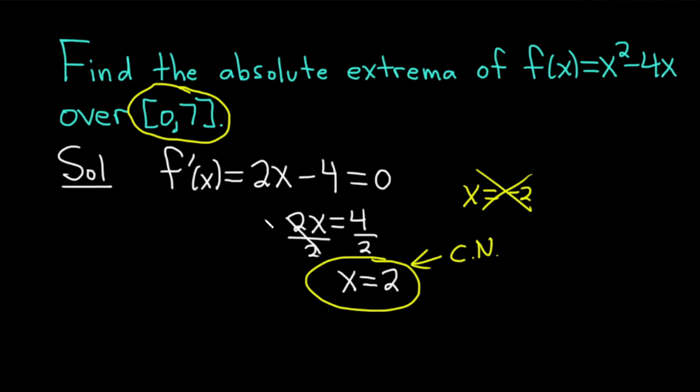Good stuff. So again, step one when finding the absolute extrema is to find the critical numbers. And that's why I did that example earlier of finding critical numbers. Step two is you basically take your critical numbers and your endpoints here, 0 and 7, and you plug them all into your original function. So let's just do it. We take the 0 and we plug it into the original. So f(0) = 0^2 - 4(0), which is just going to be 0.